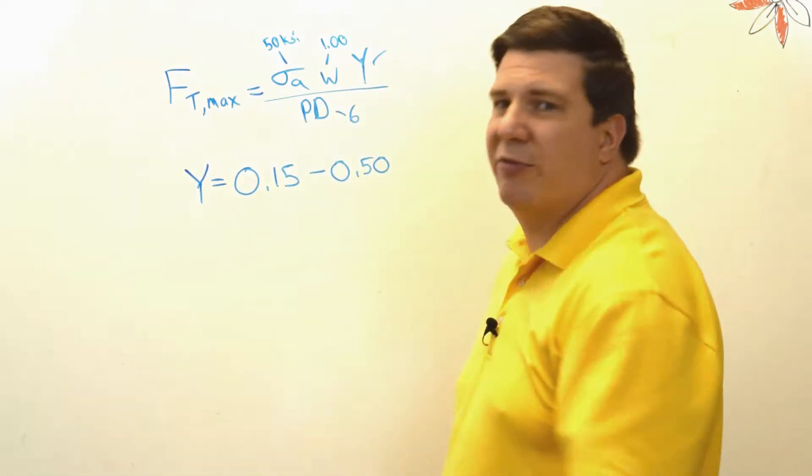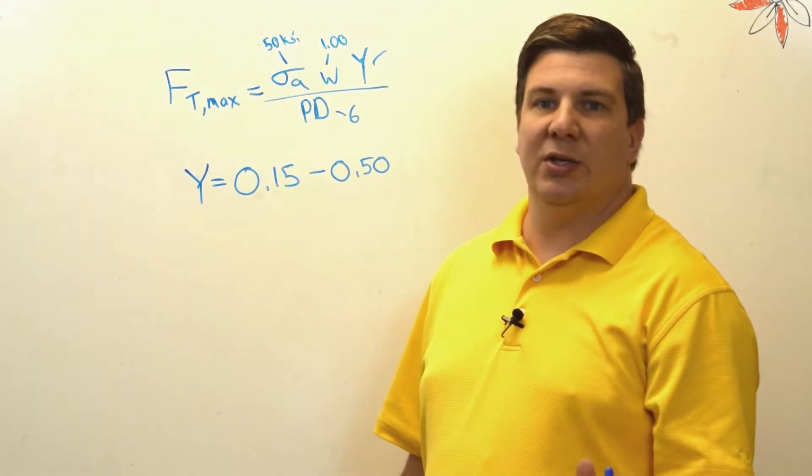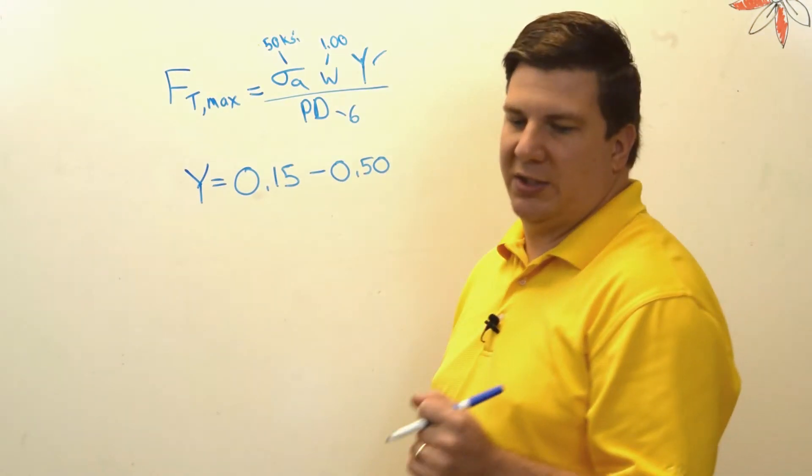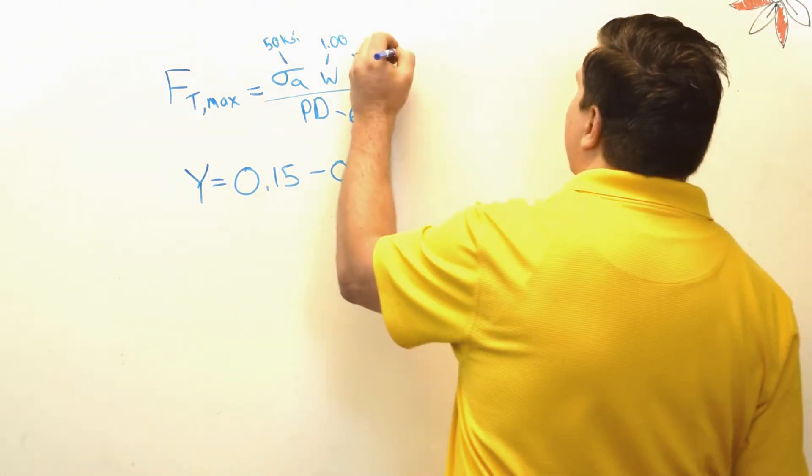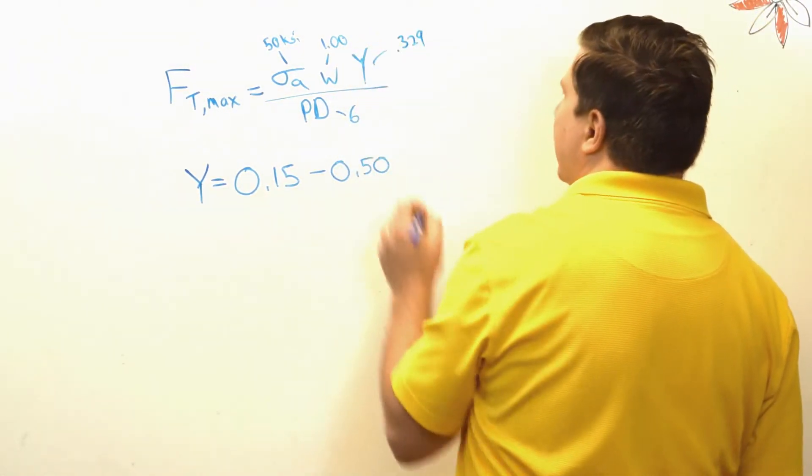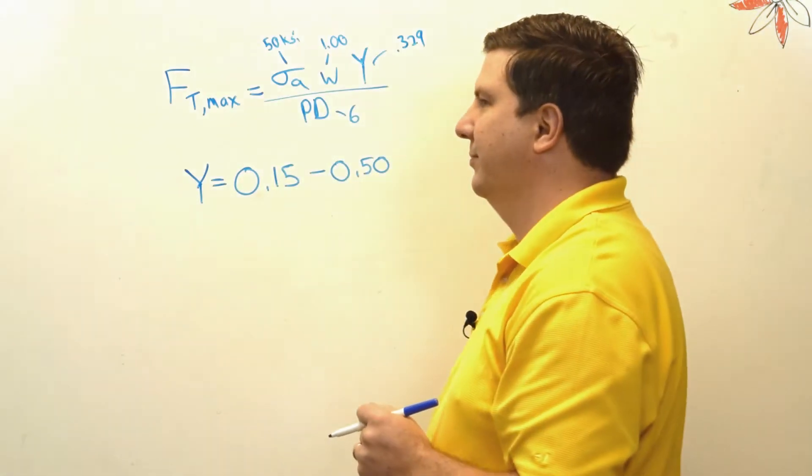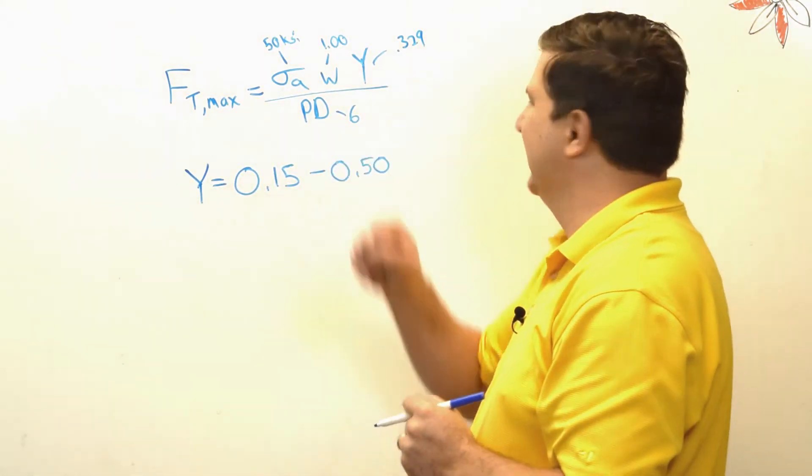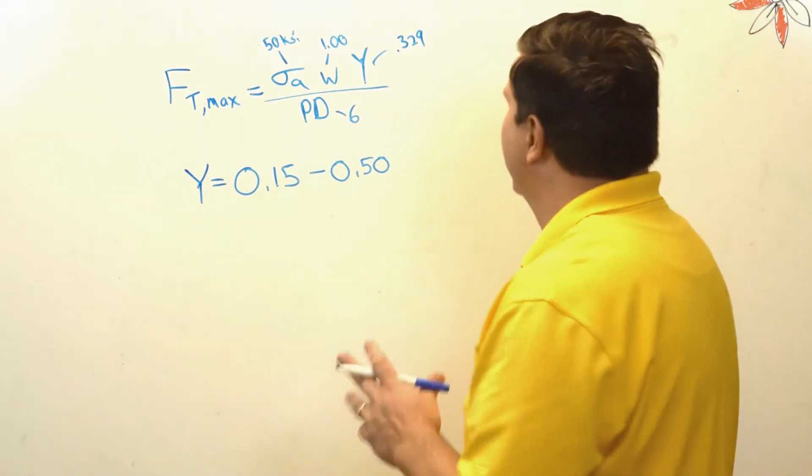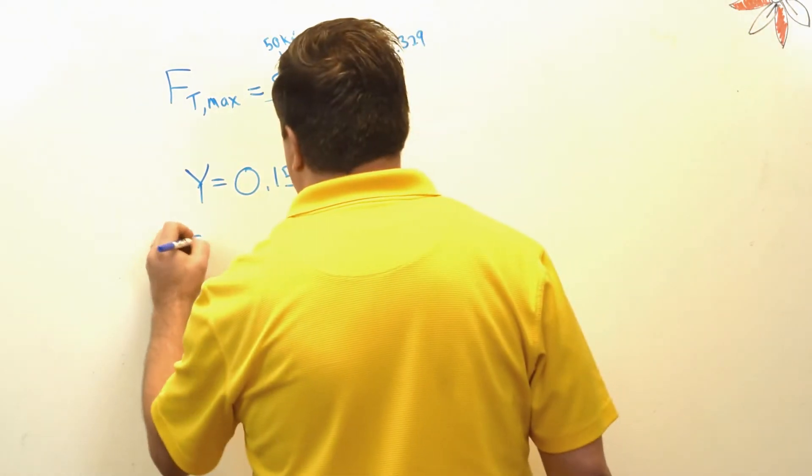And I'm going to use my 24 tooth gear, which gives me a Lewis form factor of 0.329, and my diametrical pitch is 6. So if I do all the math there and I make sure that I use psi here instead of ksi.